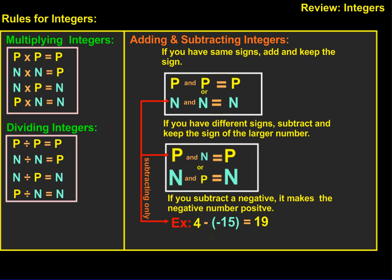The rules are the same for dividing. Two positives or two negatives are going to equal a positive, and any combination of negative and positive is going to equal negative.